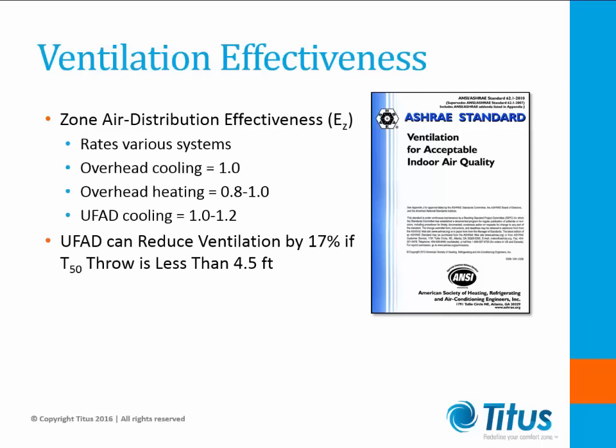ASHRAE Standard 62.1 also rates various types of air distribution systems with respect to Zone Air Distribution Effectiveness, or EZ. Ventilation air is only effective if it reaches the breathing zone of the occupants. Therefore, systems can be rated for ventilation effectiveness based on the location of the outlets, the returns, and the temperature of the supply air. Table 6.2.2.2 in the standard provides EZ values for various systems and conditions. For instance, supplying cool air from the ceiling has an EZ value of 1.